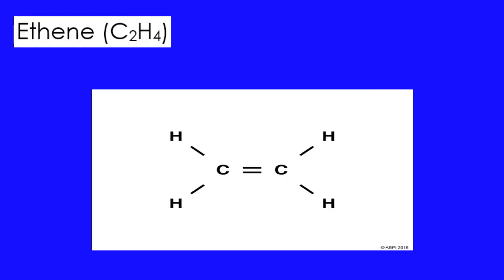Number five: ethene. Ethene has a double bond between the carbons and single bonds between each hydrogen and carbon. Each carbon requires a full octet and each hydrogen requires a pair of electrons.